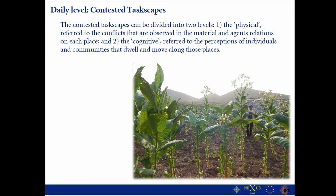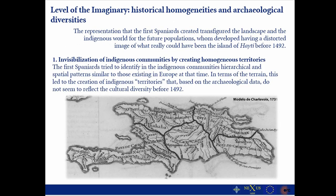The first is the physical level, which refers to conflicts observed in material and agent relations at each place. The second is the cognitive level, referring to the perceptions of individuals and communities that dwell and move along those places. Then the second major level I define I name the level of the imaginary — for lack of a better definition — and it has to do more with historical homogeneity and archaeological diversities.